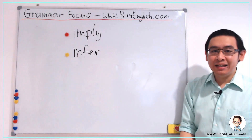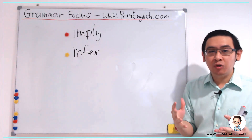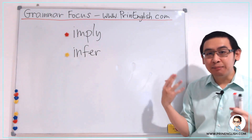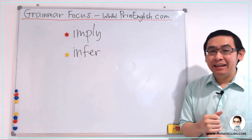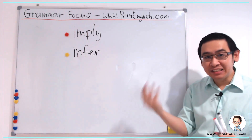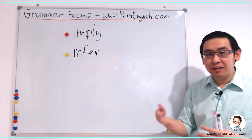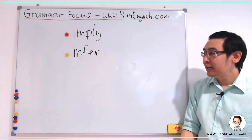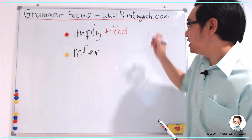Let's begin with imply. Imply means that we want to communicate or express our feelings or our ideas without actually saying it directly — we are saying it implicitly. So if you want to say something but maybe you don't want to upset the listener, we can imply because we don't want to say it directly. We say it indirectly. Normally, imply can be followed by 'that,' but that is not necessary.